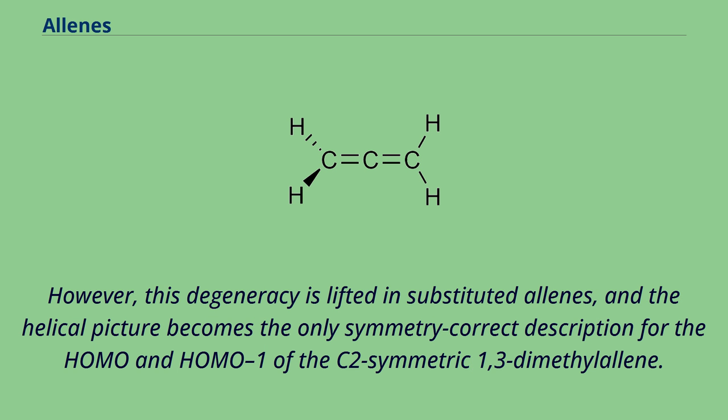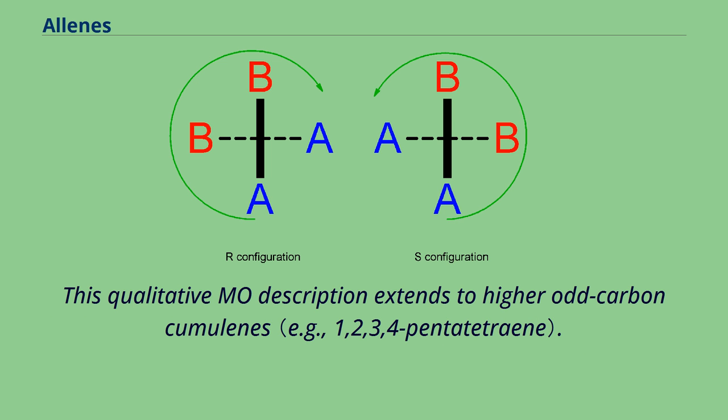However, this degeneracy is lifted in substituted allenes, and the helical picture becomes the only symmetry correct description for the HOMO and HOMO-1 of the C2 symmetric 1,3-dimethylallene. This qualitative MO description extends to higher odd-carbon cumulenes.